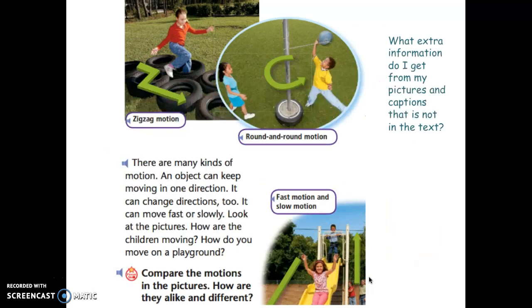There are many kinds of motion. An object can keep moving in one direction. It can change directions, too. It can move fast or slow. Look at the pictures. How are the children moving? How do you move on the playground? Let's look at this picture here. Here's a little girl. She's going zigzag through the tires. Have you ever played tetherball like these kids here? The ball in this game goes round and round. That's another type of motion.